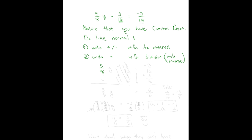So let's work it out. We have five-eighths y minus three-sixteenths equals negative nine-sixteenths. We add three-sixteenths to both sides. There's nothing underneath on the left, so we bring the five-eighths y down. The three-sixteenths terms cancel because they're additive inverses. On the right, negative nine plus three is negative six over sixteen. That reduces — two goes into both — giving us negative three over eight.